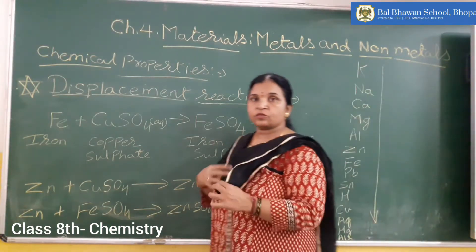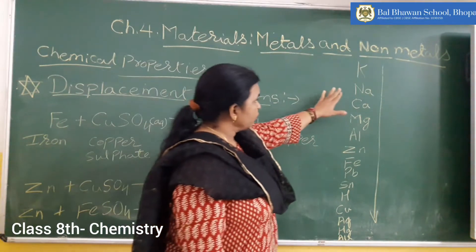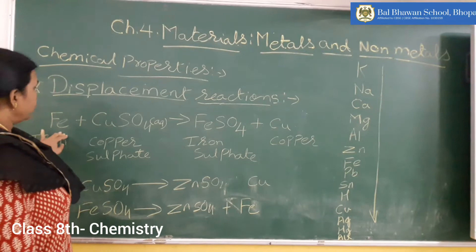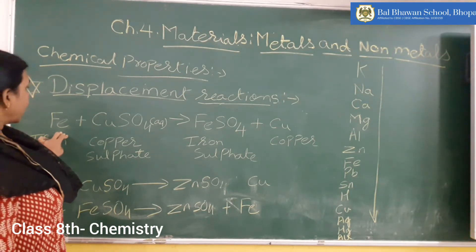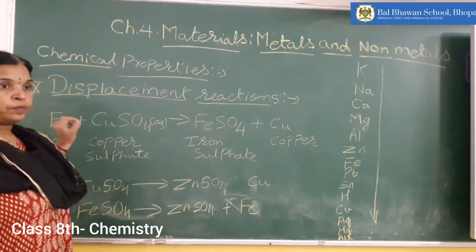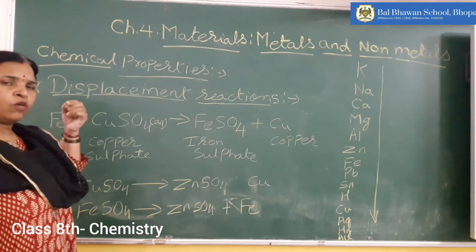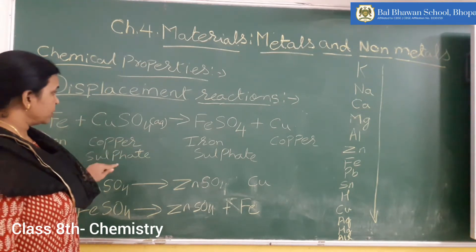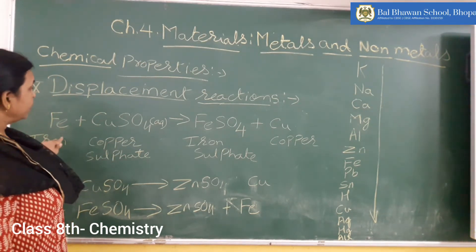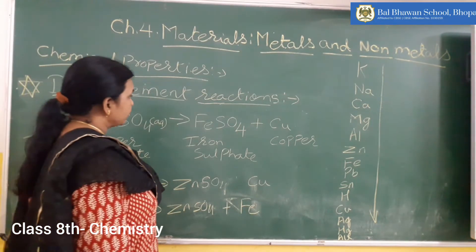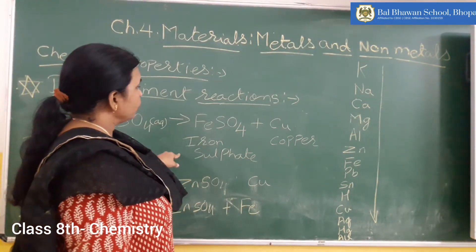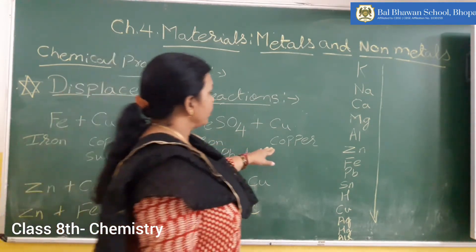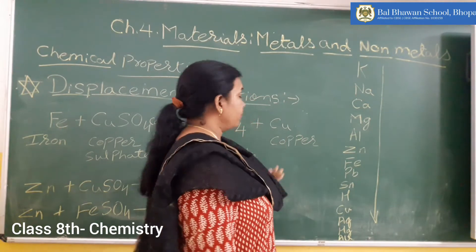The more reactive metal will displace the less reactive metal. Here I have taken pieces of iron — iron pins — and placed them in copper sulfate solution, that is aqueous copper sulfate solution. What I am going to observe is that it will produce ferrous sulfate (iron sulfate) and copper will be released as free copper.